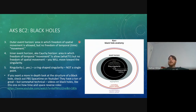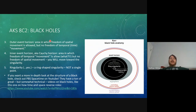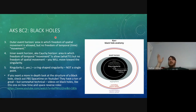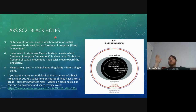A Kerr black hole actually has two event horizons. The outer event horizon is like the typical event horizon we've been discussing — in this region, freedom of spatial movement is allowed but no freedom of temporal movement. Interestingly, that almost sounds like normal existence: we move through space freely but are locked into moving forward through time. Of course, a key difference is that you cannot escape this region.